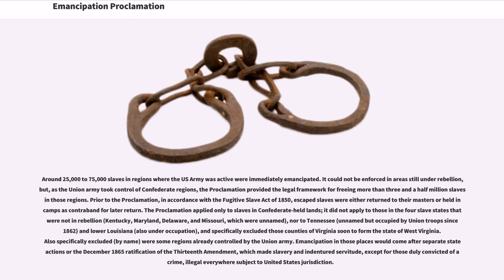Around 25,000 to 75,000 slaves in regions where the U.S. Army was active were immediately emancipated. It could not be enforced in areas still under rebellion, but as the Union Army took control of Confederate regions, the proclamation provided the legal framework for freeing more than 3.5 million slaves in those regions. Prior to the proclamation, in accordance with the Fugitive Slave Act of 1850, escaped slaves were either returned to their masters or held in camps as contraband for later return.